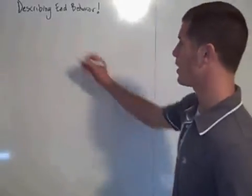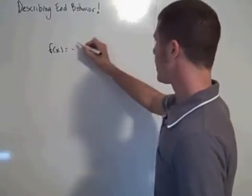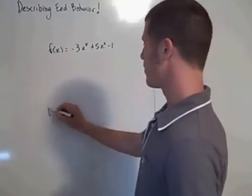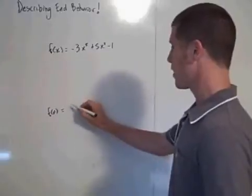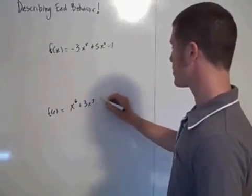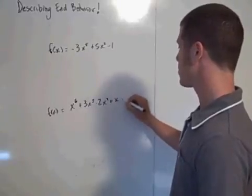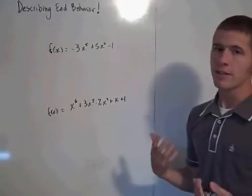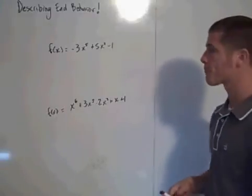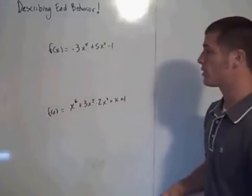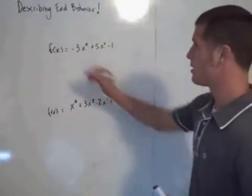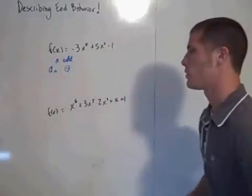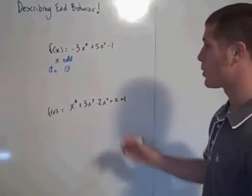Maybe you have two functions. One is f of x equals negative 3x to the fifth plus 5x squared minus 1. And maybe you have f of x equals x to the sixth power plus 3x to the fifth minus 2x squared plus x plus 1. The only two things you're concerned about are: what's the degree — is it odd or even — and is the leading coefficient positive or negative? Then you'll have one of those four options. Here, the degree is 5, so that's odd, and the leading coefficient is negative.